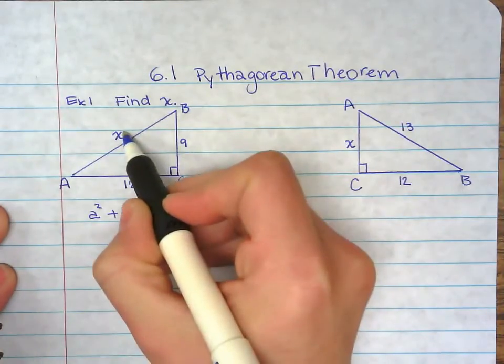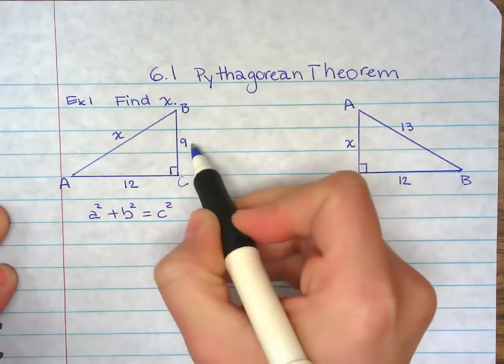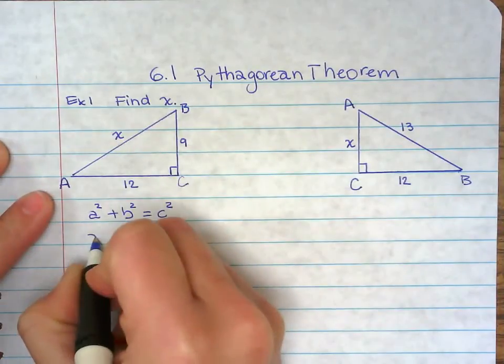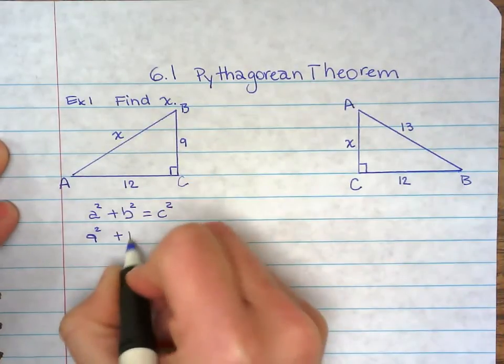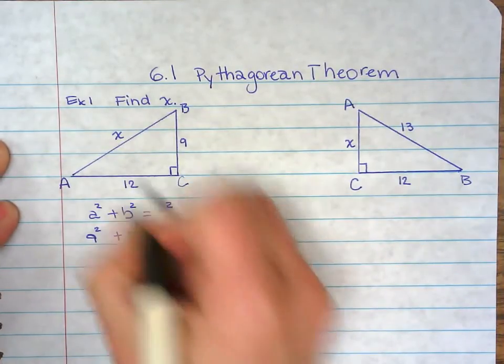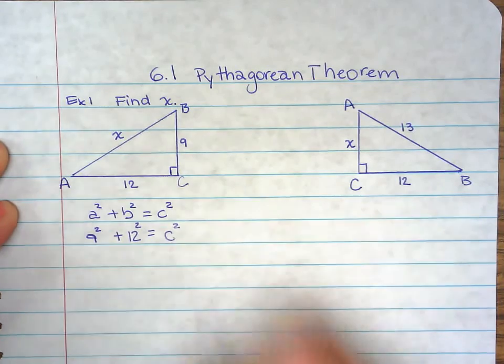So this is c, this is b, this is a. So a², a is 9, so 9² plus b², right here, 12, equals c², that's going to be x, right there.